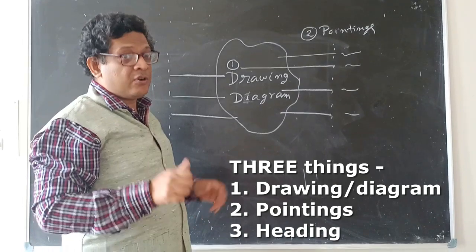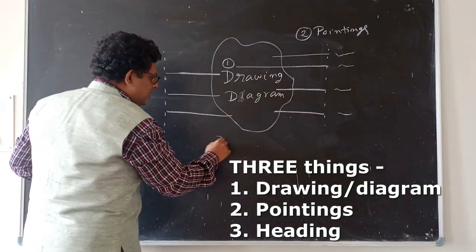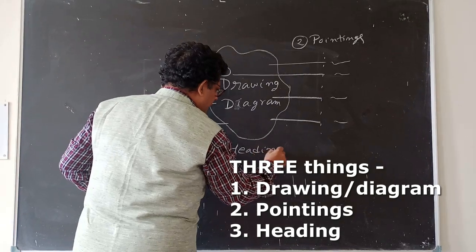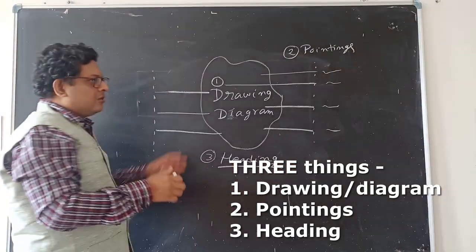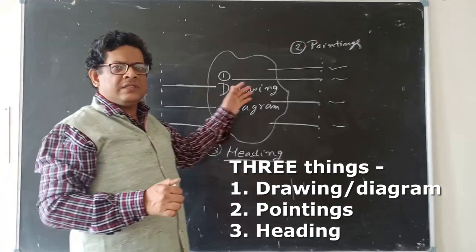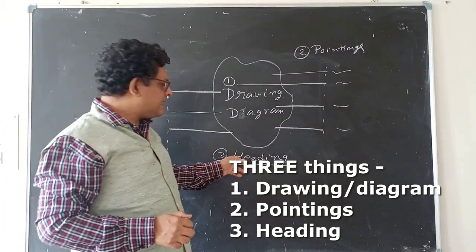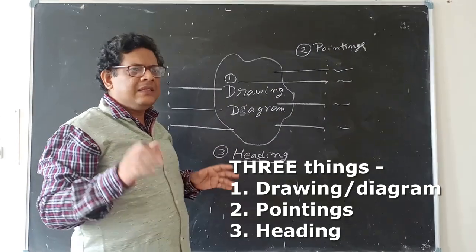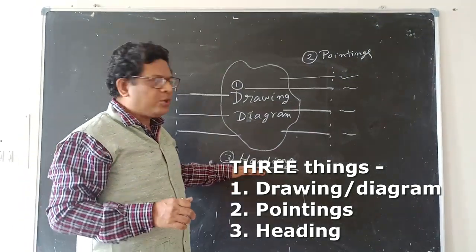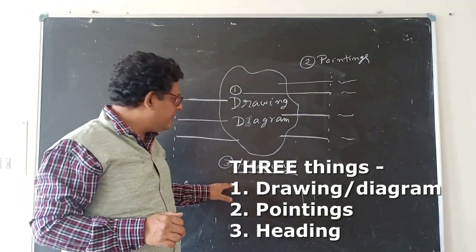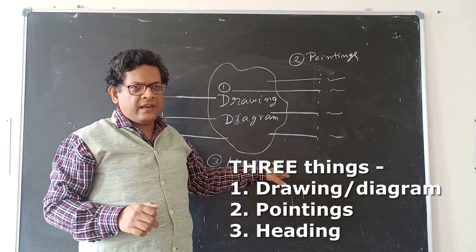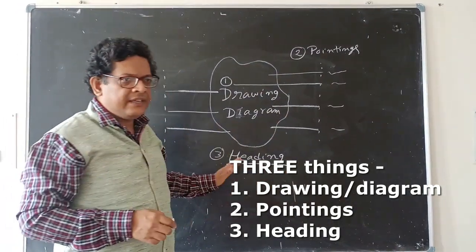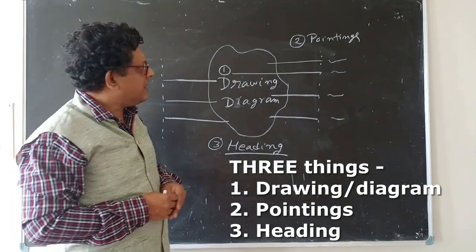So first is drawing, second pointings. In a diagram, science teachers want three things: number one, the drawing itself; second, the pointing; and third, that is generally followed by everybody, the heading. You have to write what is that picture, what is the diagram. Generally heading you write at the top, but in science we prefer the bottom position. We write the heading just below the diagram. So three things: drawing, pointing, and heading.